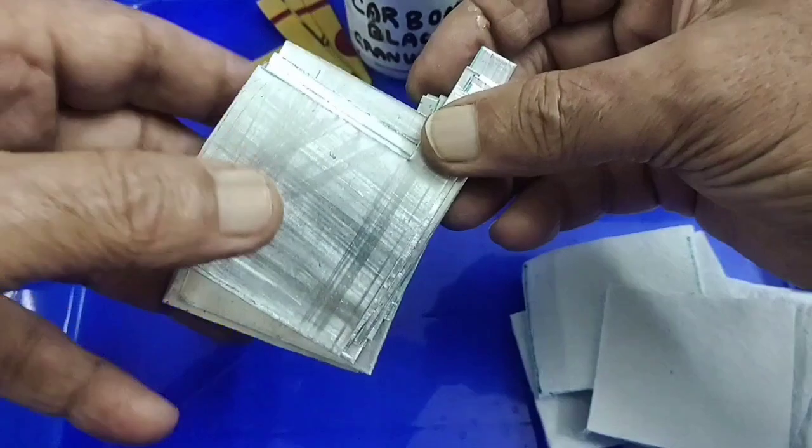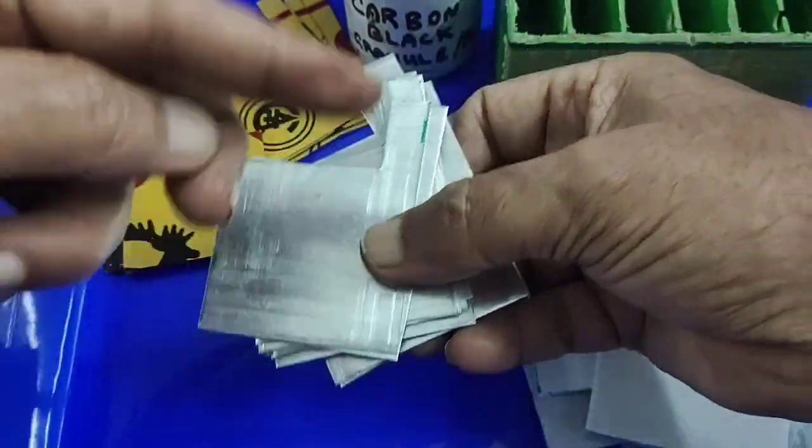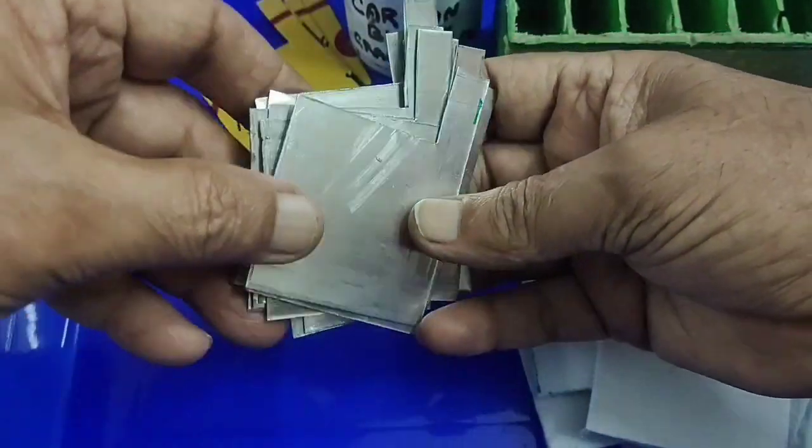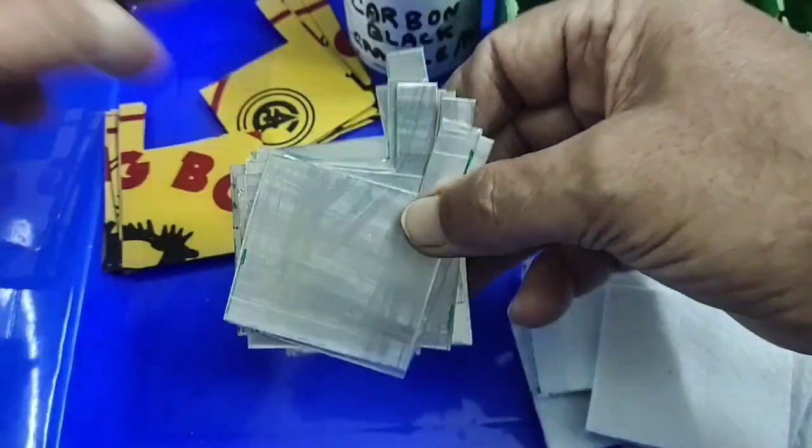These are aluminum sheets, some 5 by 5 centimeters. Total numbers are kept ready.